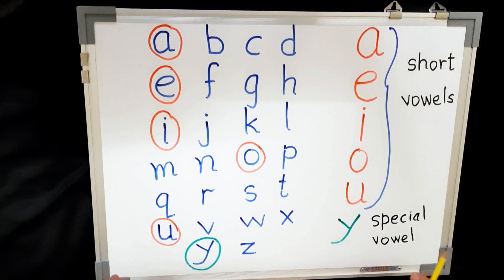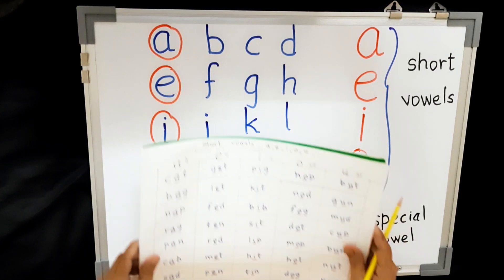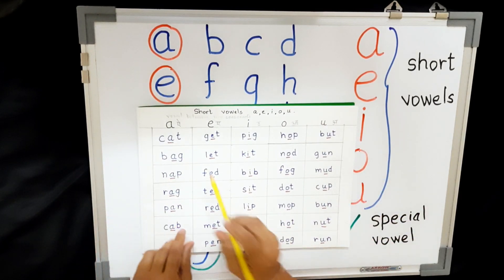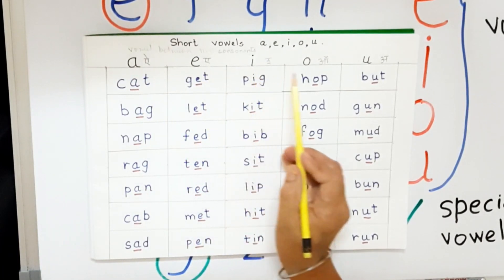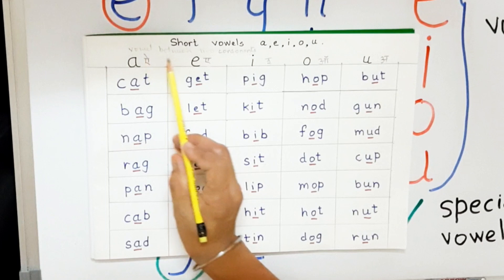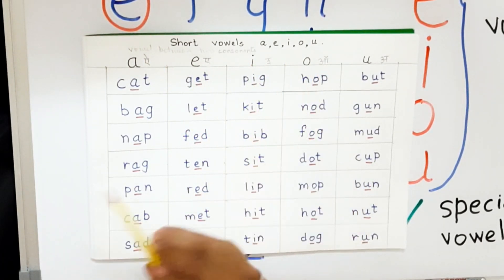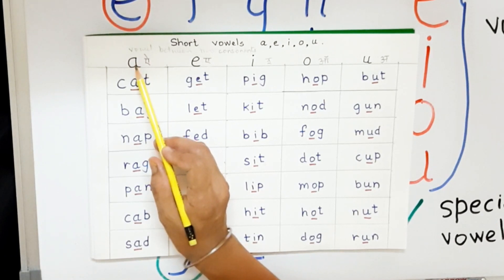So, without vowels, you can't make a single word. Here are some words. You please repeat after me. A, E, I, O, U. These are short vowels. And vowel between two consonants make a word.